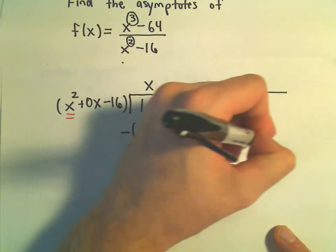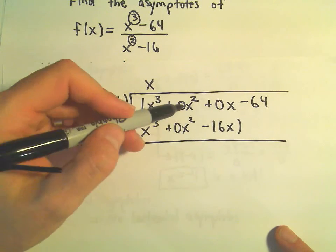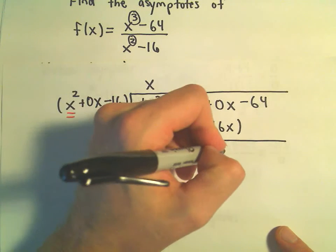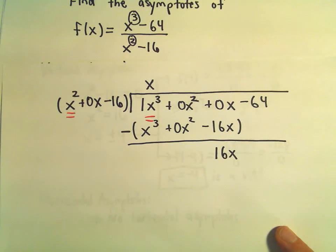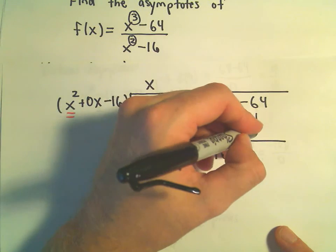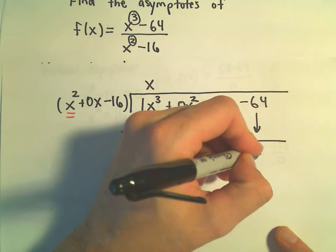I subtract everything. The x cubes cancel. There's no x squareds. It looks like we would get a positive 16x. And then we could just simply drop down our negative 64.